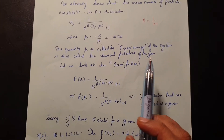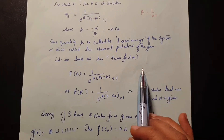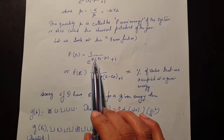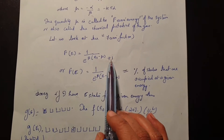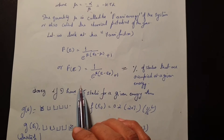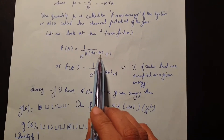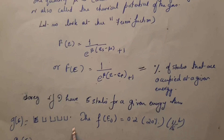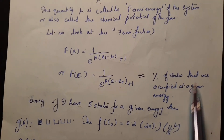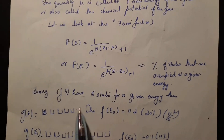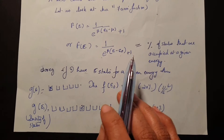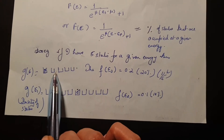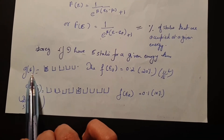Now we have to analyse the Fermi function and how it varies with temperature. The Fermi function is written as F(E) = 1 / (e^(β(E − E_F)) + 1), where I replace μ with E_F to indicate Fermi energy. It gives the percentage of states that are occupied at a given energy. For example, if the density of states g(E) = 5 at a particular energy, that means there are 5 available states.